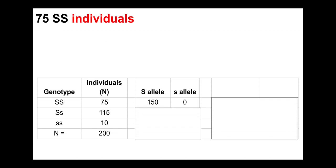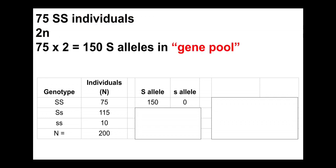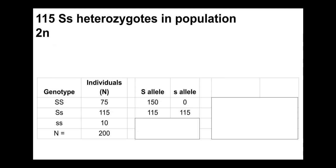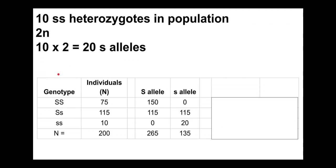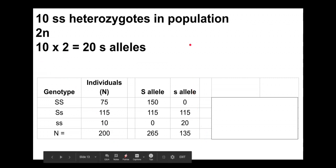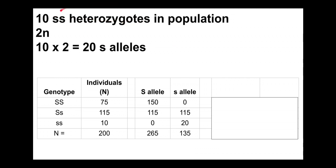If we have 75 big S big S individuals, they are all diploid (2n), so each contributes two big S alleles: 75 times 2 is 150 big S alleles. The 115 big S little s heterozygotes contribute 115 big S alleles and 115 little s alleles. The 10 little s little s homozygous recessives are 2n, so 10 times 2 is 20 little s alleles.